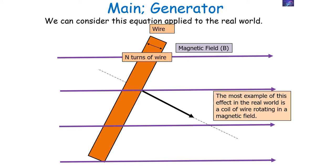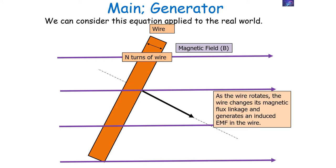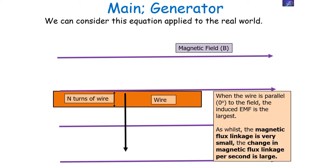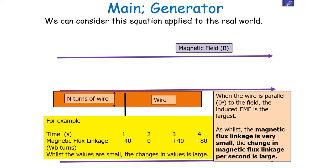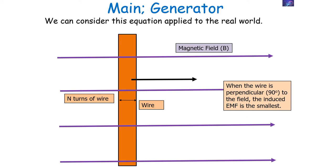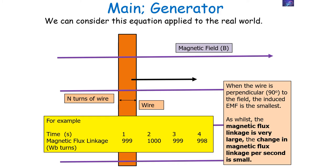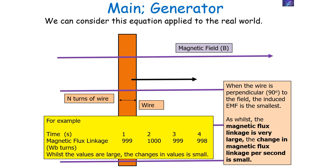The most common example of electromagnetic induction is a coil of wire rotating in a magnetic field. As the wire rotates, its magnetic flux linkage changes, and this induces an EMF. When the wire is parallel to the field, the induced EMF is largest, because whilst the magnetic flux linkage is very small, the change in magnetic flux linkage per second is very large. When the wire is perpendicular to the field, the induced EMF is smallest, because whilst the magnetic flux linkage is very large, the change in magnetic flux linkage per second is very small.